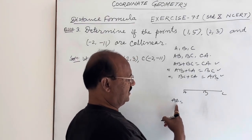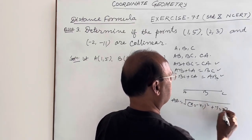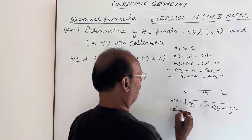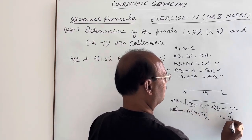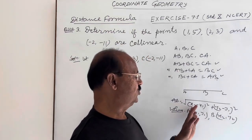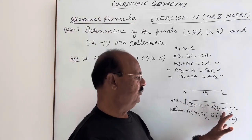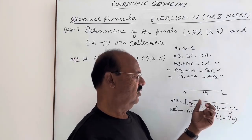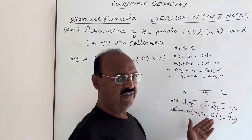We have already discussed the distance formula in previous videos. The distance between two points A and B is: √[(x₂ − x₁)² + (y₂ − y₁)²], where (x₁, y₁) are coordinates of A and (x₂, y₂) are coordinates of B. Note that writing x₁ − x₂ instead of x₂ − x₁ causes no problem, because both are squared — the square of a positive or negative number is always positive.